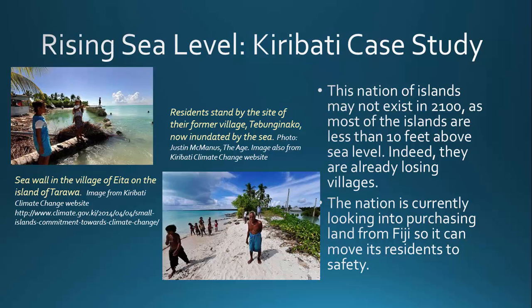They've tried to put up sea walls and other measures to slow the flow of water over their land, but they know it's just a matter of time. Currently they're looking into purchasing land from the island of Fiji, which has a higher elevation, so they can move their residents there when they can no longer live on the islands of Kiribati.